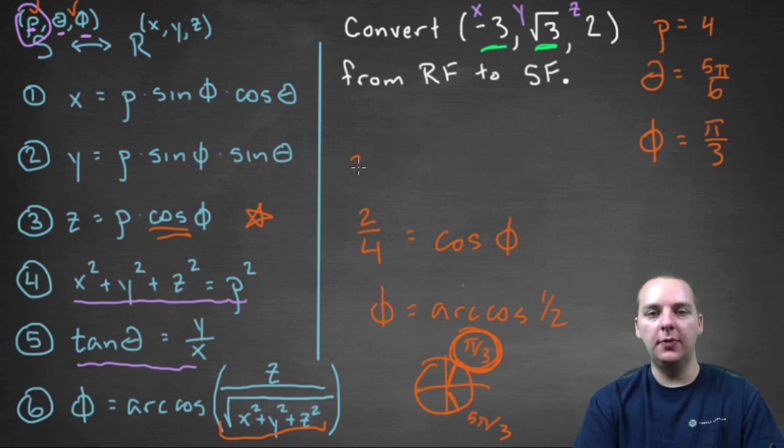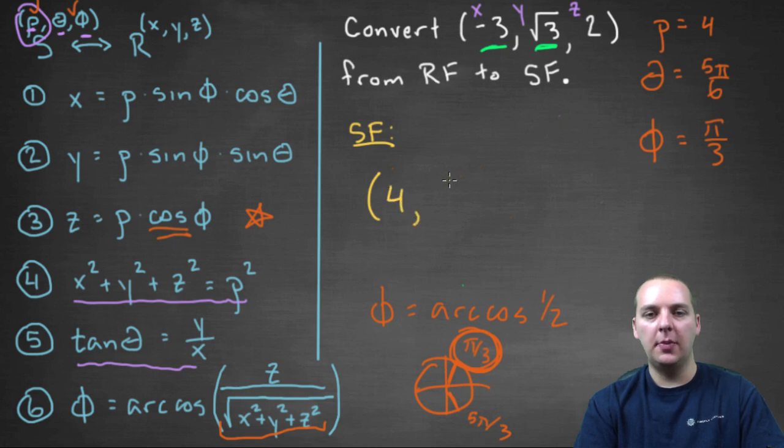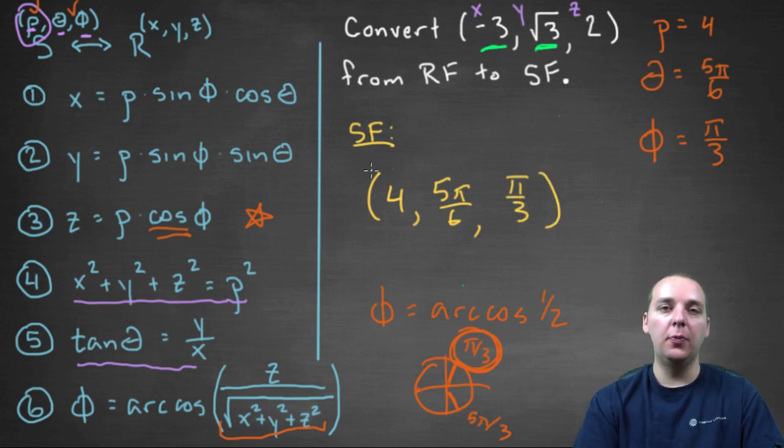Alright, and we're done. So we've done it. We've used these conversions to convert a point in rectangular form into spherical form. So spherical form, the point would be expressed as four, comma five pi over six, comma pi over three. And this point in spherical form represents the same location in space as negative three root three, root three, two does in rectangular form.